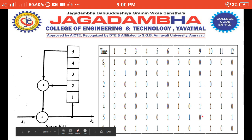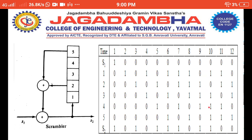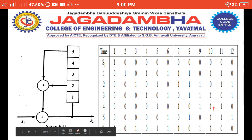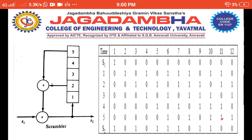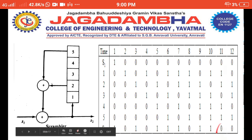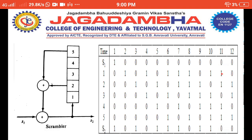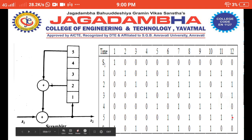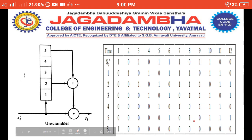Continuing the scrambling: 1 XOR 0 = 1, 1 XOR 0 = 1. Then 0 XOR 1 = 1, and 1 XOR 0 = 1. Shift register 2 content is 1: 1 XOR 1 = 0, and 0 XOR 0 = 0. So the next scrambled bit is 0. Likewise this process continues for the next incoming input bits. The resulting scrambled sequence S2 is now complete.